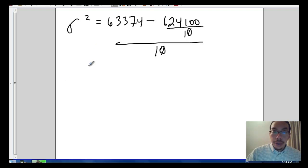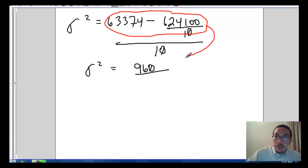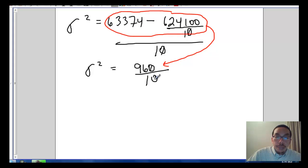If I do all of that math, sigma squared, if you plug this into your calculator, 624,100 divided by 10, get a result, subtract it from 63,374, you should come up with 964. Alright, so this whole top portion should come up to 964, and we're dividing it by 10.